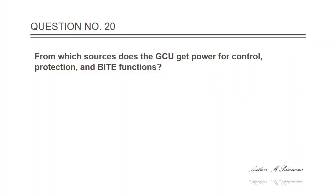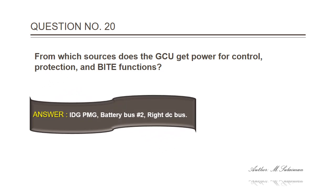Question 20: From which sources does the GCU get power for control, protection, and bite functions? Answer: IDG PMG, battery bus 2, and the right DC bus.